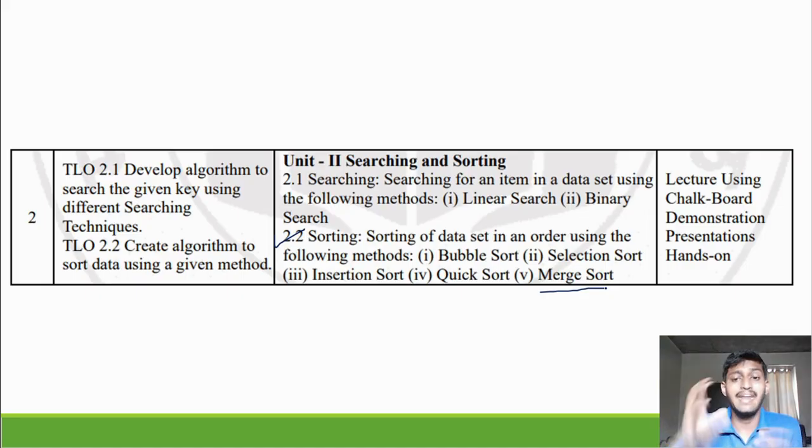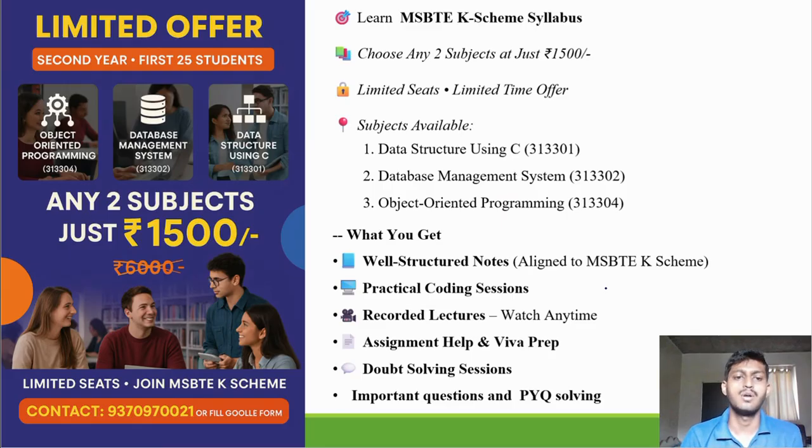Before, if you want to join the course, you can join two subjects for 1500. If you want, you can buy it. What you will get, everything is in description. Description में जाओ, वहाँ पर Google Form की लिंक है. सब मिल जाएगा आपको.